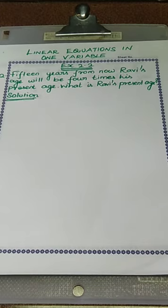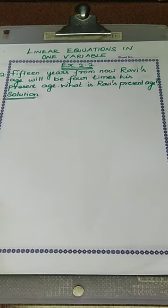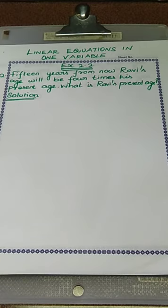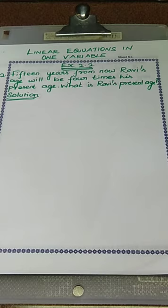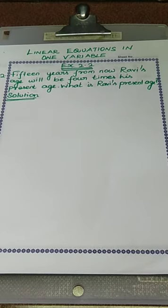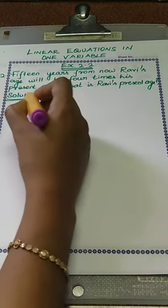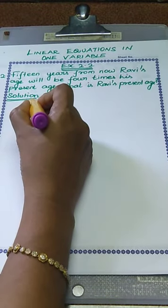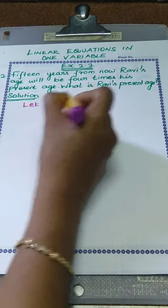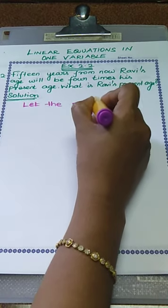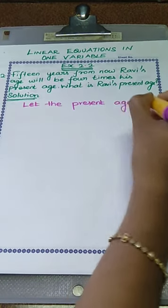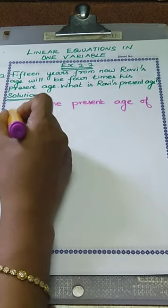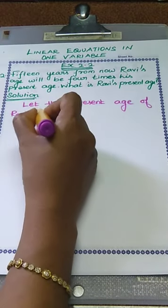What is the given clue? 15 years from now means we have to add Ravi's age with 15. 15 years from now, Ravi's age will be 4 times his present age. His present age is x, and 4 times means we have to take 4x. Let the present age of Ravi be x years.